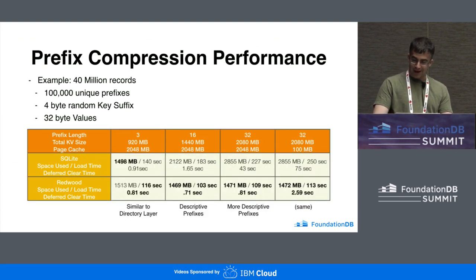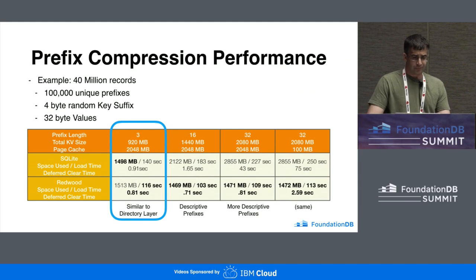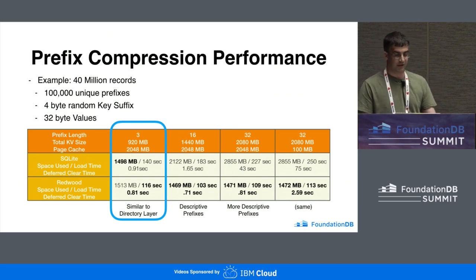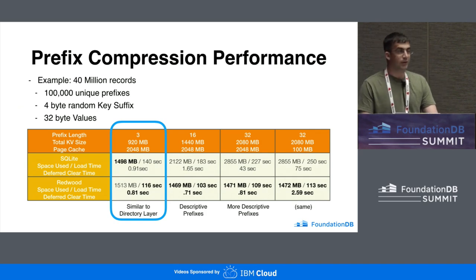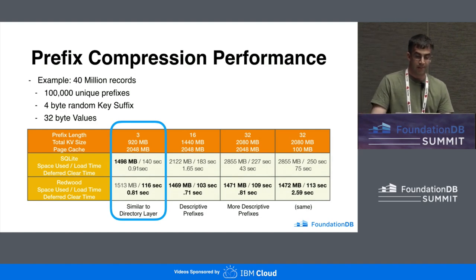Here's a big chart, and I'm going to focus on just a column at a time. This first column has prefix lengths set to three — 100,000 unique prefixes that are all three bytes in length. This produces a key value set size of 920 megabytes, and we're using a two-gig page cache. This is very similar to what you would get using the FDB directory layer with 100,000 directories — the average shortened prefix the directory layer gives you would be about three bytes. Both SQLite and Redwood are around 1.5 gigs of used space.